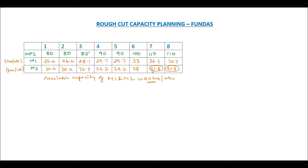This is how this simple analysis is done based on required capacity and available capacity. Whatever the overload or underload, the planner can adjust the plan accordingly.